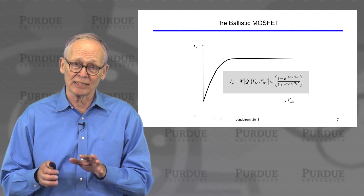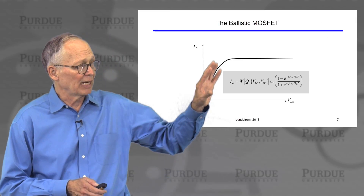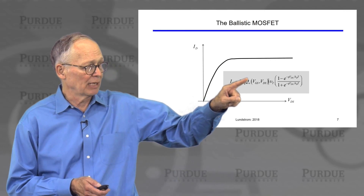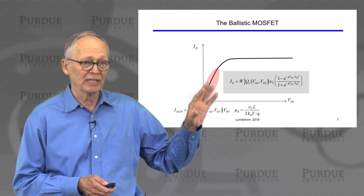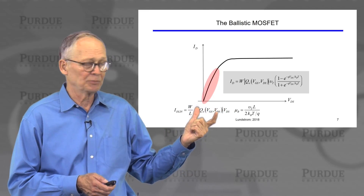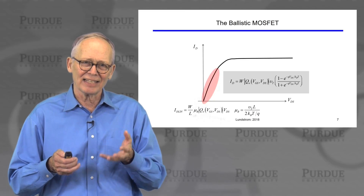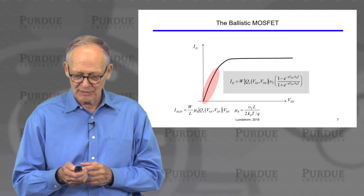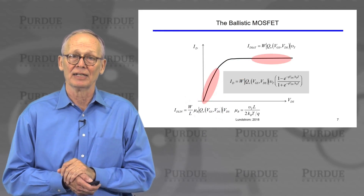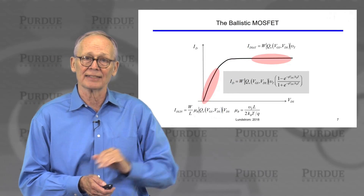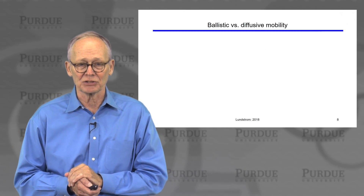We then took those Landauer expressions for the linear region and saturated region, and found that even in the ballistic case we could derive a full IV characteristic of the MOSFET — a general characteristic from small drain-to-source voltage to large drain-to-source voltage. In the small drain-to-source voltage regime it simplifies to our linear current expression, expressible in terms of a ballistic mobility, making it look like the traditional expression. For high drain-to-source voltage, it simplifies again, looking much like the traditional expression except that the high-field saturation velocity is replaced by the unidirectional thermal velocity.